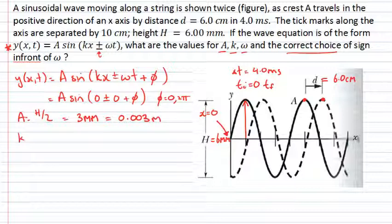Secondly, the wave number K. How can we get that? Well, remembering the wave number K is 2 pi divided by the wavelength. If I measure the distance here, because I'm plotting y versus x, then the x-axis describes a length. We're told that the tick marks for that length are separated by 10 centimeters.